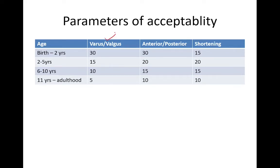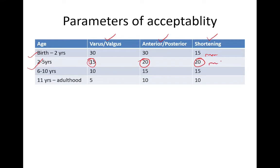Parameters of acceptability for shaft of femur fractures are divided into varus/valgus displacement, anteroposterior displacement, and shortening. From birth to 2 years, varus or valgus deformity of less than 30 degrees, AP deformity of less than 30 degrees, and shortening of less than 15 mm is acceptable. From 2 to 5 years, AP and varus/valgus deformity of less than 20 degrees along with shortening of less than 20 mm is acceptable.